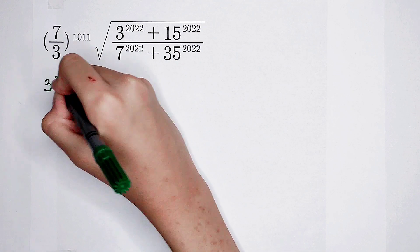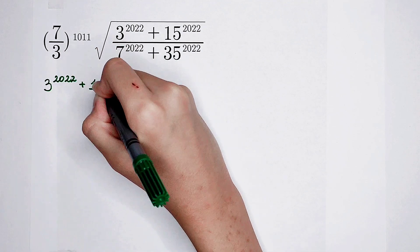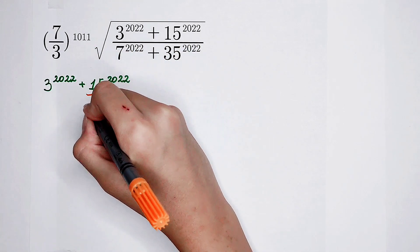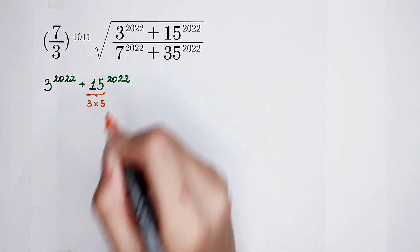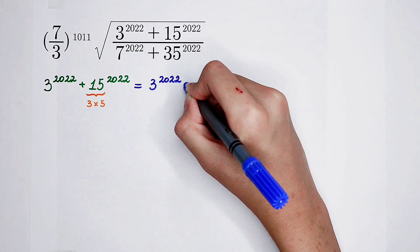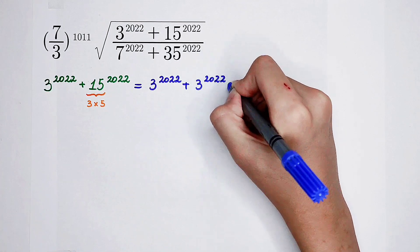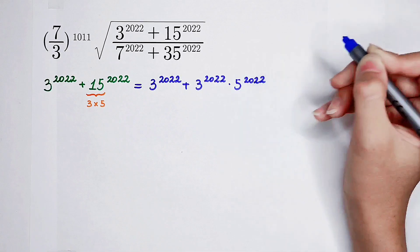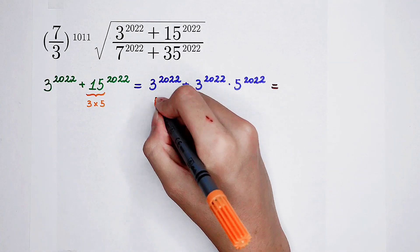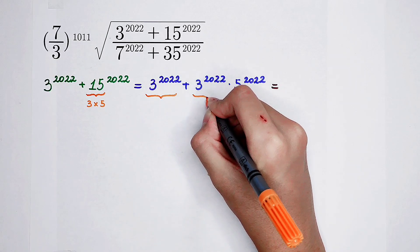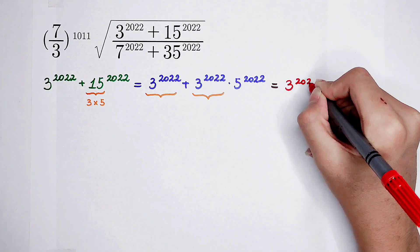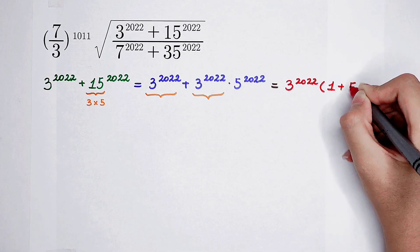So, first, the numerator: 3 to the power of 2022 plus 15 to the power of 2022. Have you noticed that 15 can be written as 3 times 5? So it is 3 to the power of 2022 plus 3 to the power of 2022 times 5 to the power of 2022. Then take 3 to the power of 2022 out, because it appears twice. So this is 3 to the power of 2022 times (1 plus 5 to the power of 2022).